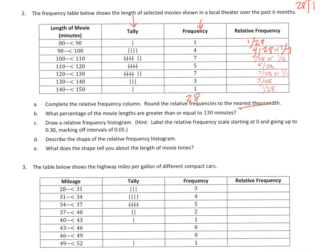It says to the nearest thousandth, and then we know we're looking at percentages next. What percentage of the movie lengths are greater than or equal to 130 minutes? So we know 130 minutes is going to fall right here. It doesn't talk an hour, so we're talking about these bottom two. So if I add those up, I know that it's four 28ths or one-seventh. So you'll turn one-seventh into a decimal and then a percent.